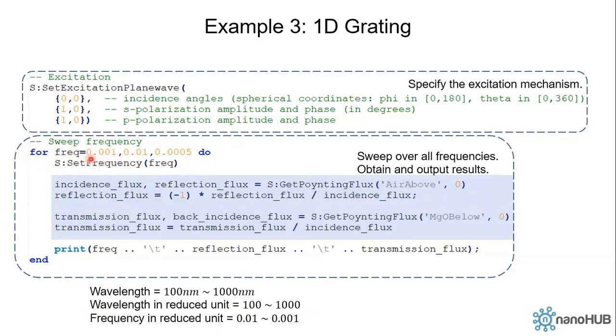In this example, we directly use frequency as our loop constant, which runs from 0.001 up to 0.01 at an interval of 0.0005. We set the frequency, obtain the result for each frequency, normalize the reflection flux and transmission flux, and finally we output the result.